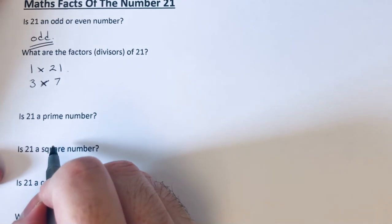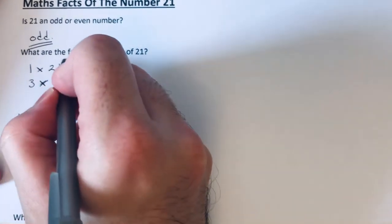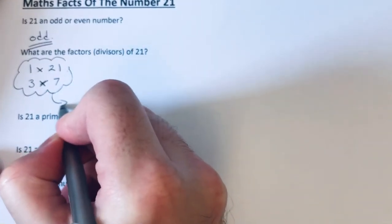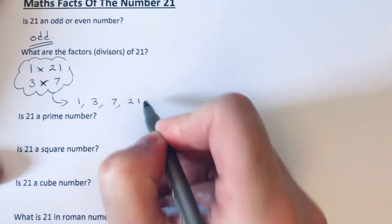4 doesn't go into 21. 5 doesn't go into 21. 6 doesn't go into 21, and then we're back to 7. These are all our factors: 1, 3, 7, and 21.